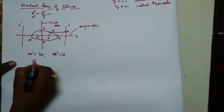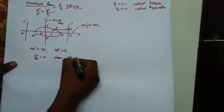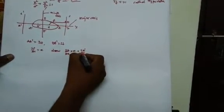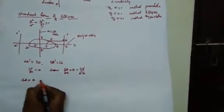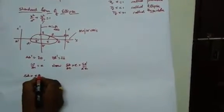For that, we will make two ratios: SA by AZ equals to e, and SA dash by A dash Z equals to e. With this we try to find out the focus as well as the equation of the directrix. We can write SA equals e into AZ.